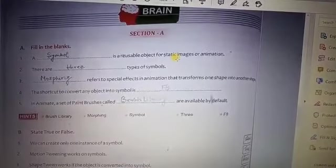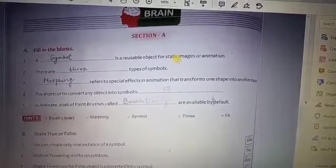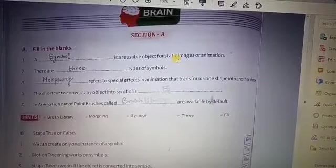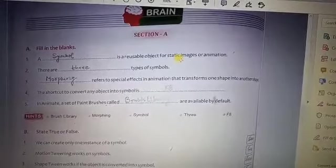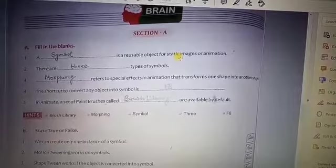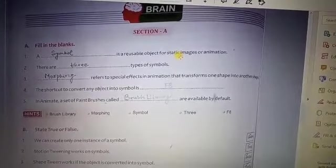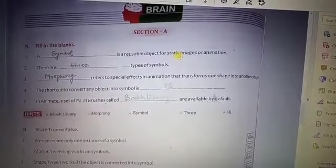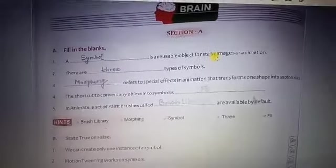First: Symbol is the reusable object for static images or animation. Symbols are reusable objects. We can define the symbol once, and then we can use it again and again. Every time it can appear onto the stage. So symbols are reusable objects. You can develop them one time and use them multiple times.